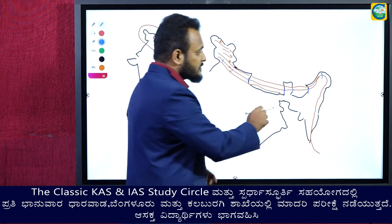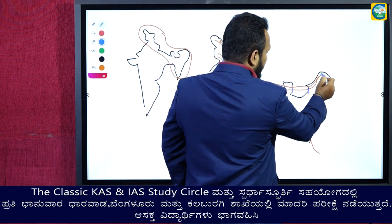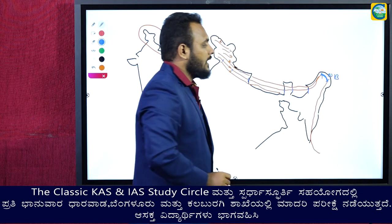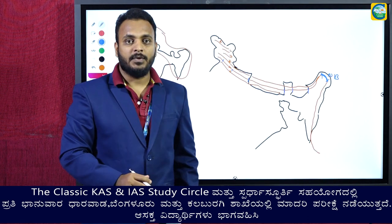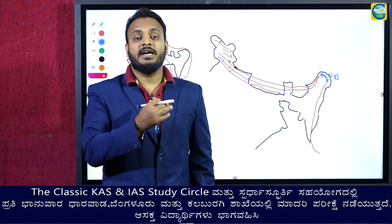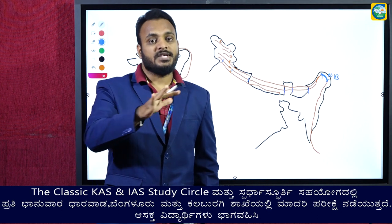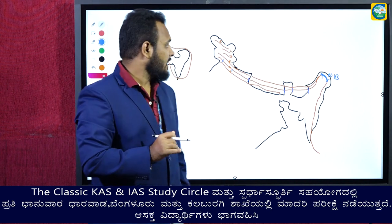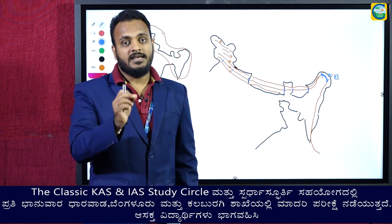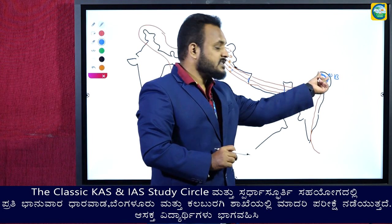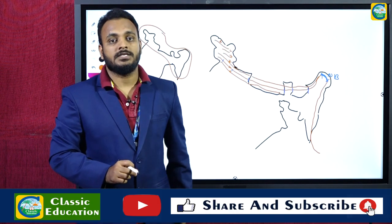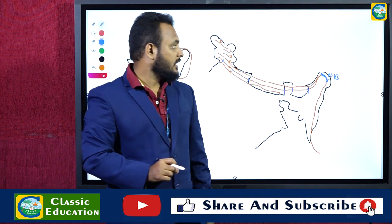Soon after Mishmi ends, we get a mountain range called Namcha Barwa. Namcha Barwa has a very significant role when we try to understand the Brahmaputra River. Namcha Barwa is a hill range present in the Himalayas in Arunachal Pradesh.